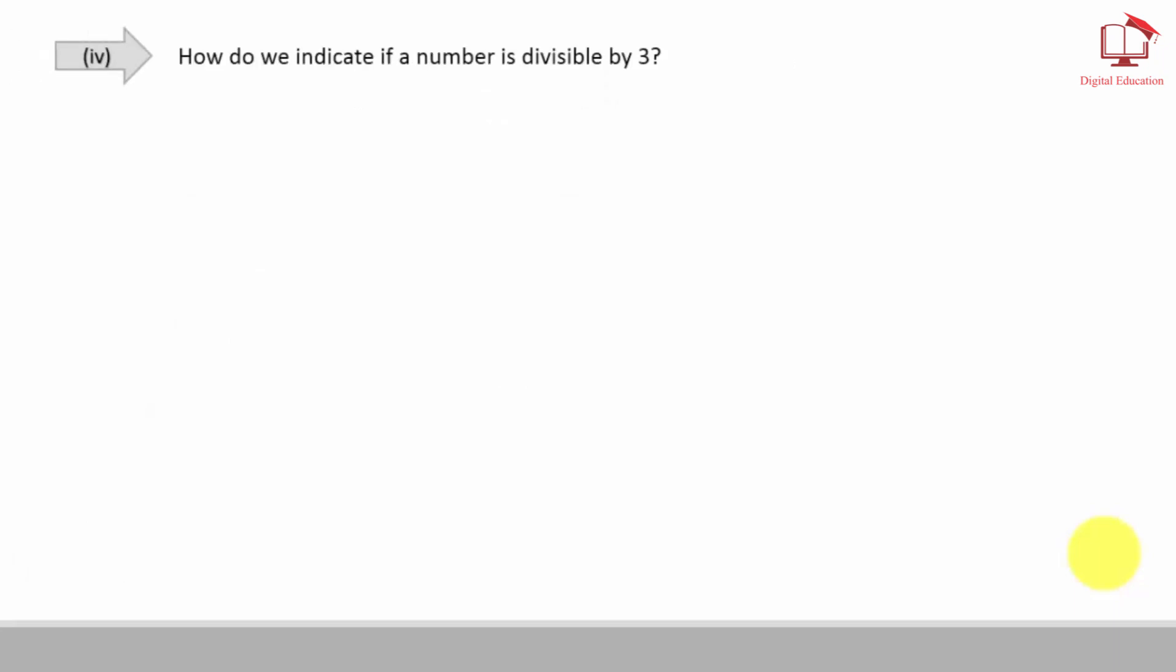Part 4. How do we indicate if a number is divisible by 3? Answer: A number is divisible by 3 if the sum of its digits is divisible by 3.